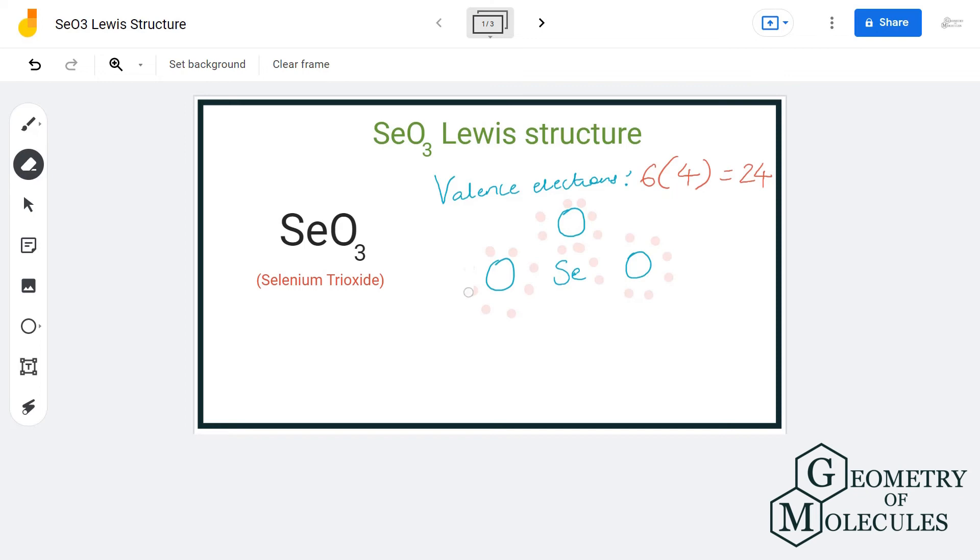That way, the selenium atom will have twelve valence electrons in its outer shell and all the oxygen atoms will have eight valence electrons in their outer shell.